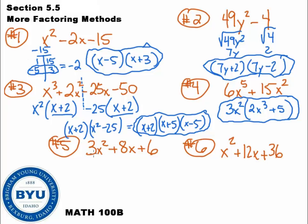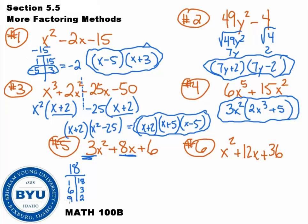Next one: any common stuff between 3, 8, 6? I don't see anything. Count the terms: one, two, three — a three-term polynomial. The a value is 3, so because the first value is not 1, we need to use the AC rule. I take a times c: 3 times 6 is 18. I want factors of 18 that add to 8. Factors of 18: 1 and 18, 6 and 3, 9 and 2. I don't see getting 8 out of any of these, so therefore this is non-factorable.